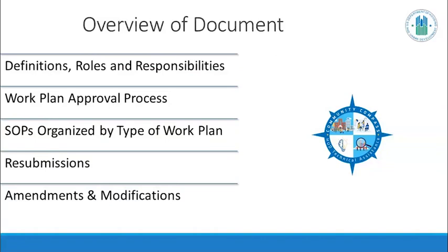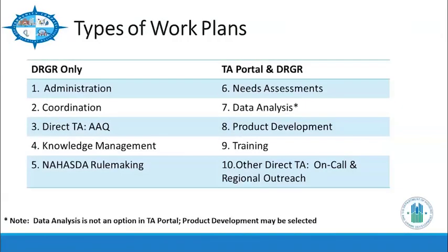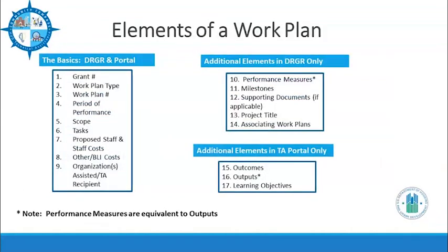Have you considered the number of different WorkPlan types that we have? There are about 10 work plan types — I say about 10 because Direct TA includes different types of work such as on-call and regional outreach. The SOPs explain the approval process by work plan type and detail the different requirements needed in both DRGR and the portal. These work plan types come from the latest NOFA and explain the activities associated with each. It's important to note that some of the terms used in the portal and DRGR mean the same thing — for instance, performance measures in DRGR is the same as outputs in the portal.